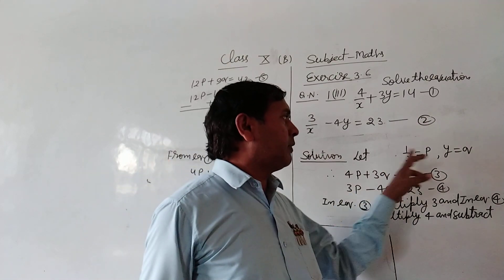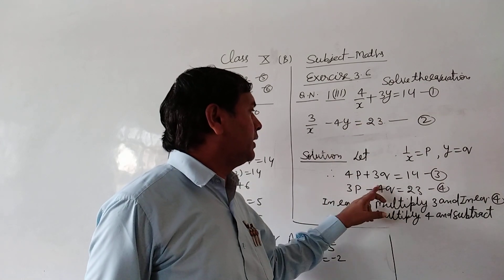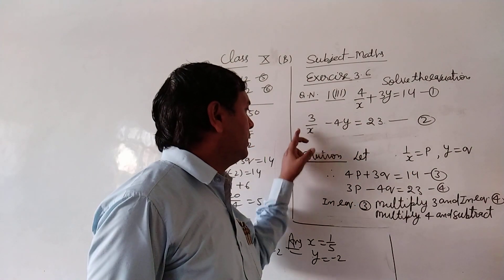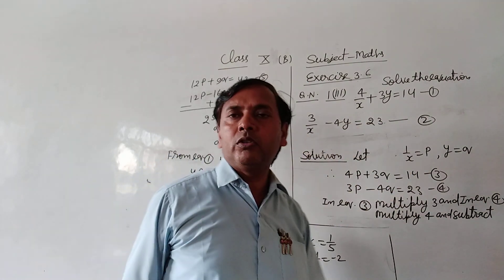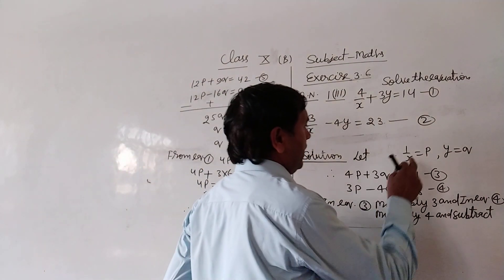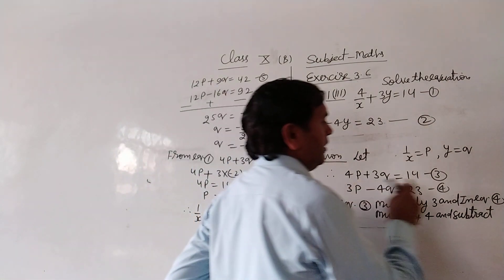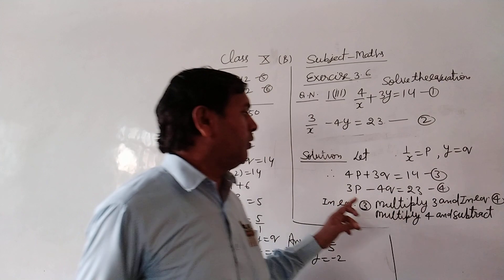Let 1/x = p and y = q. So 4p + 3q = 14, equation 3, and 3p - 4q = 23, equation 4. In equation 3, multiply by 3, and in equation 4, multiply by 4.